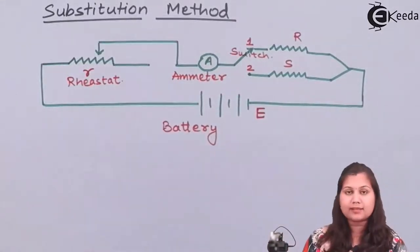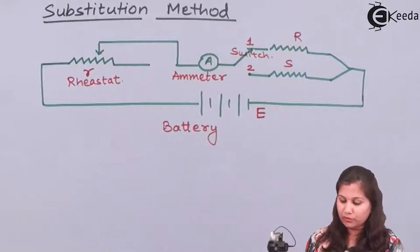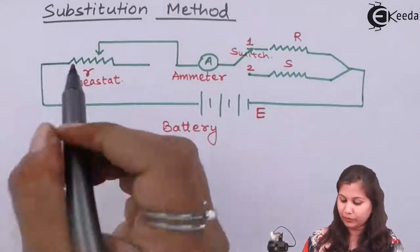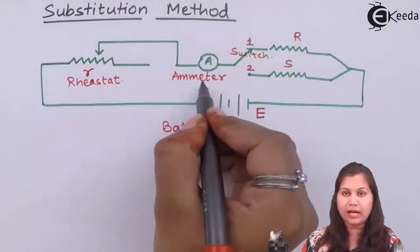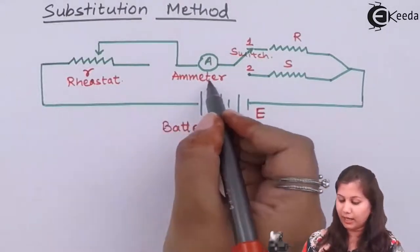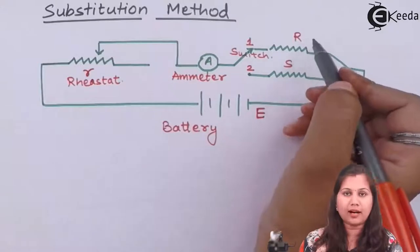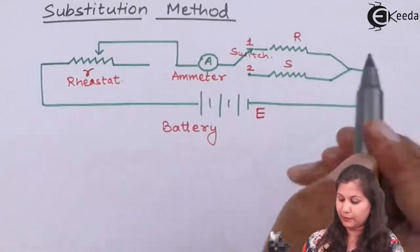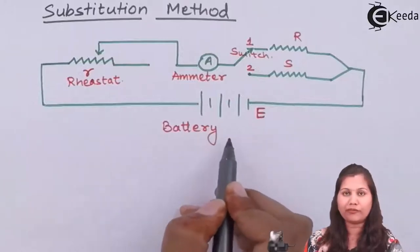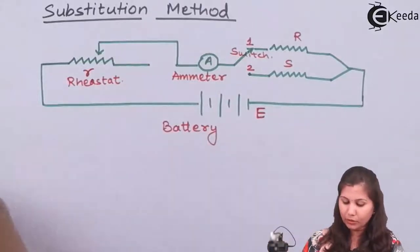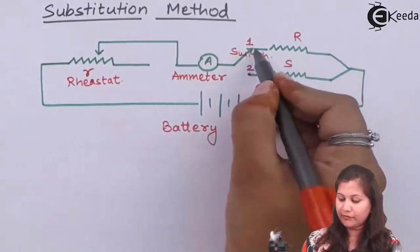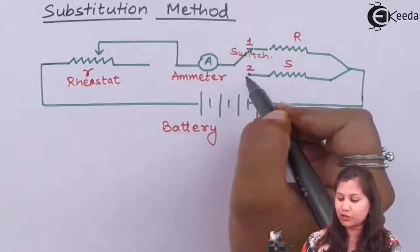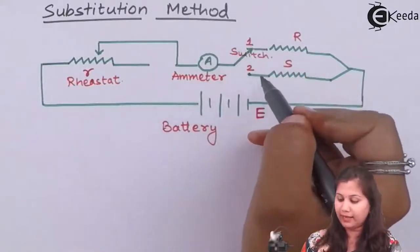This is the circuit diagram for the substitution method. You can see here we have a rheostat, then we have an ammeter which is measuring the current. R is the unknown resistance and S is the standard resistance. E is the EMF of the battery. We have a switch which can be put to two positions, either at one or at two.